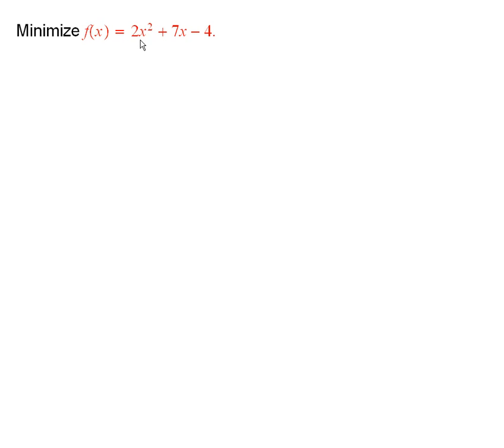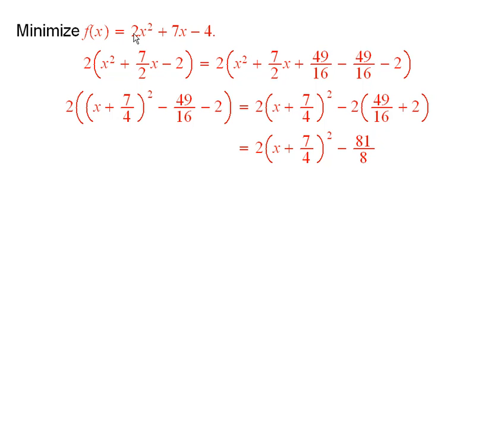I want to minimize f of x equal to 2x squared plus 7x minus 4. Now to do that we will complete the square. First factor out a 2. And so this expression here is 2 times x squared plus 7 halves x minus 2.